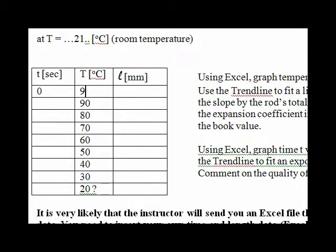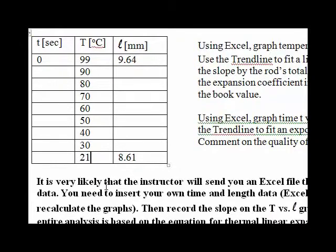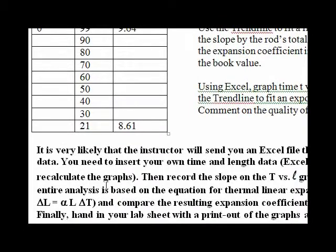Those two from the video are 99 degrees Celsius and 9.64 millimeters, and then 21 degrees Celsius and 8.61 millimeters. I had question marks here because it may not be exactly 99 or 98, same with the room temperature. Now, here, as I said, we're just going to take those two numbers.